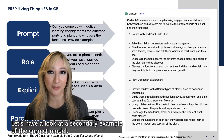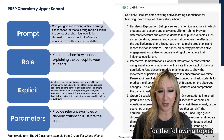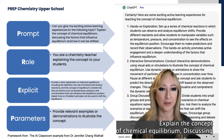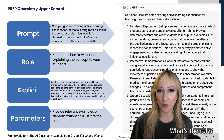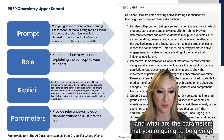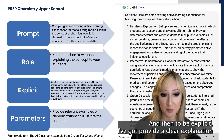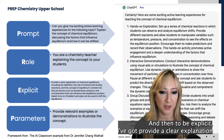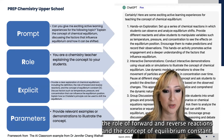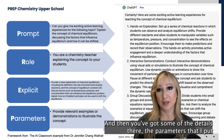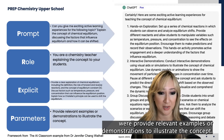Now let's have a look at a secondary example of the PREP model — a chemistry unit. The prompt: can you give me some exciting active learning experiences for the following topic? Explain the concept of chemical equilibrium, discussing the factors that influence equilibrium and how it can be shifted. The role: you are a chemistry teacher exploring the concept with your students. To be explicit: provide a clear explanation of chemical equilibrium, including the definition, the role of forward and reverse reactions, and the concept of equilibrium constant. The parameters: provide relevant examples or demonstrations to illustrate the concept.